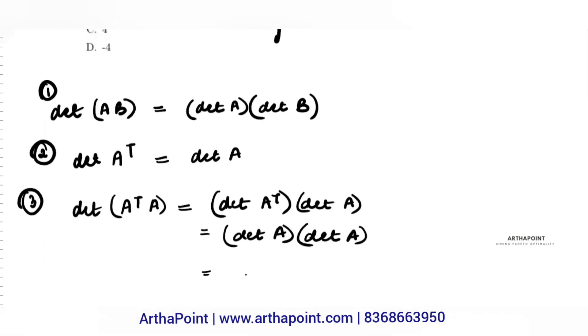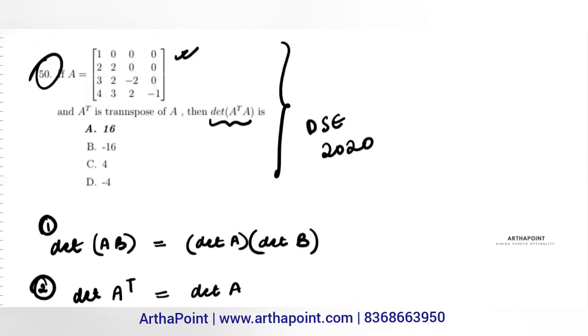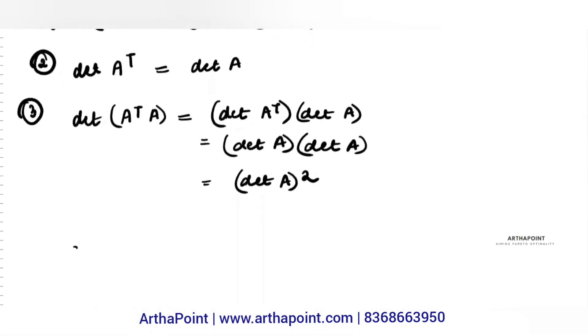This is nothing but determinant of A squared. Now in any lower triangular matrix, the determinant of the matrix is given by the multiplication of the diagonal elements.